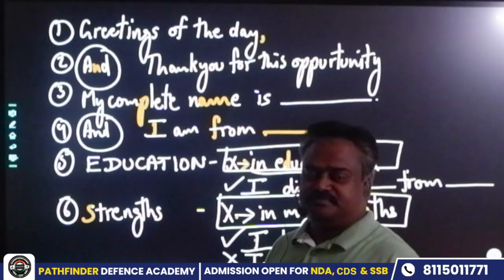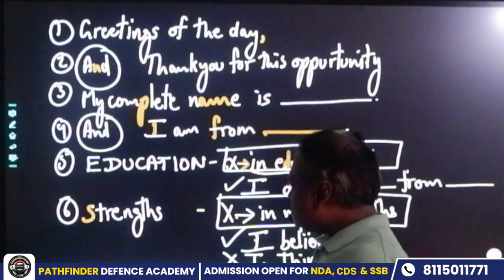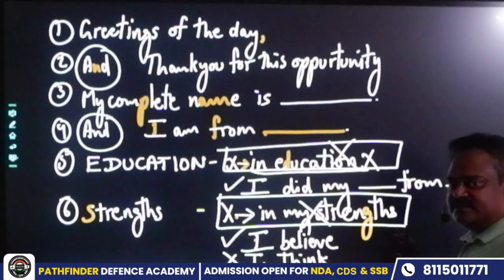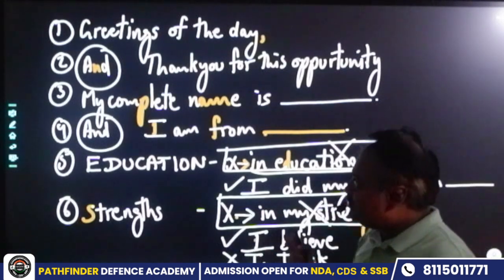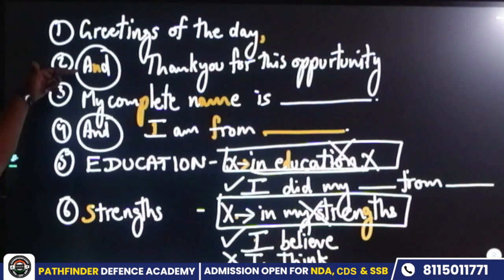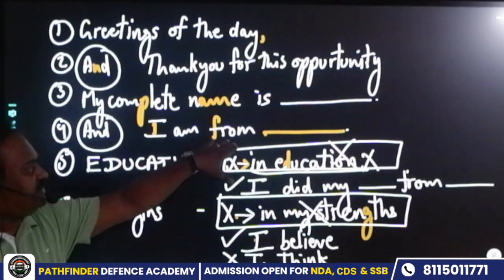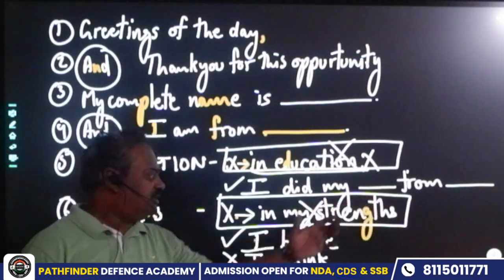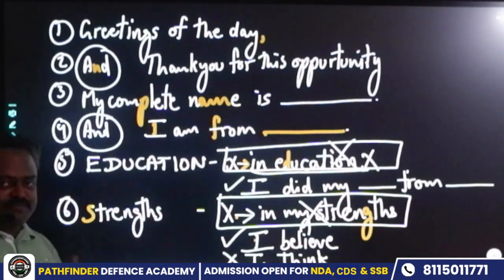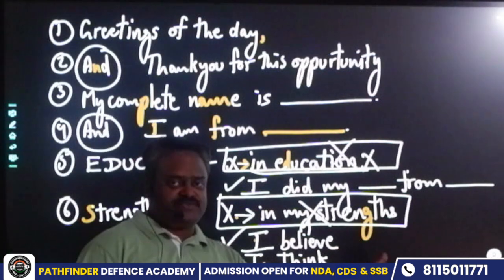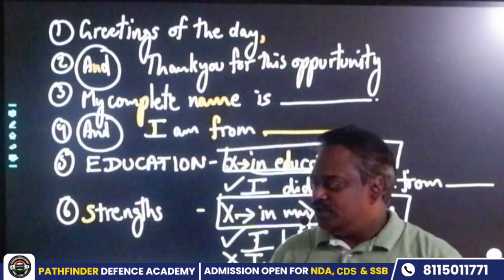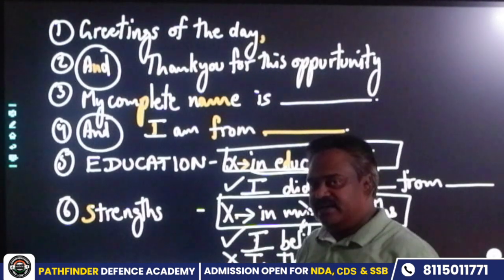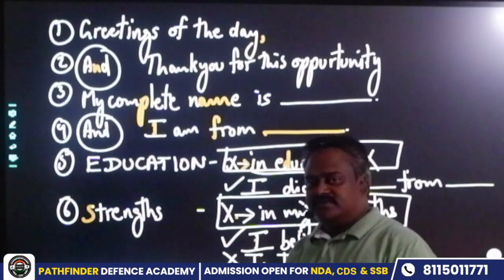So the structure for now is: greetings, gratitude, complete name, place — I am from — education, I did my high school and intermediate, and then for strengths: I believe my strengths are... Next, we will discuss how many strengths and weaknesses to mention.